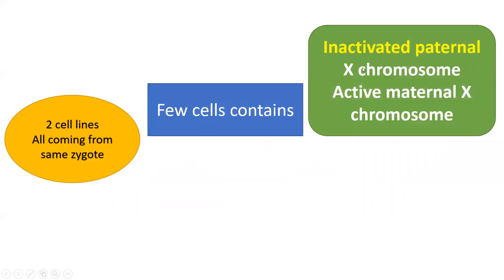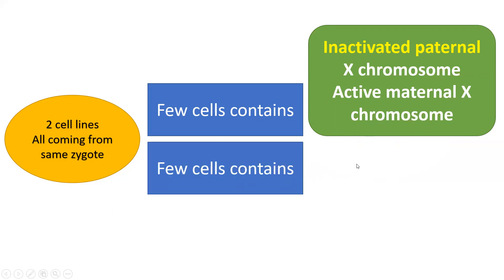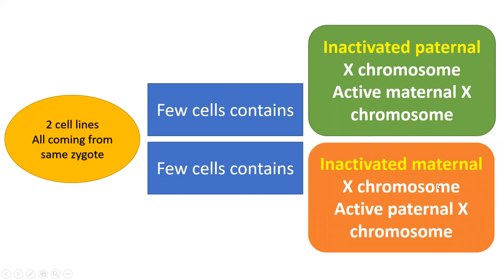In this case, there are two different cell lines. One cell line has an inactivated paternal X chromosome and an active maternal X chromosome. Another cell line has an inactivated maternal X chromosome and an active paternal X chromosome. These two cell lines are derived from a single zygote. This is why females are called mosaics.